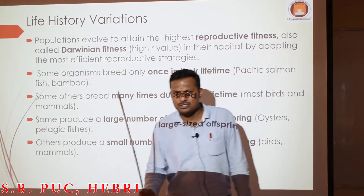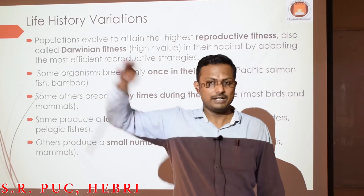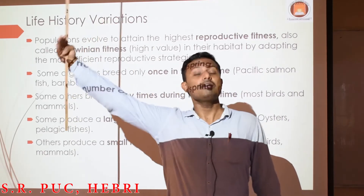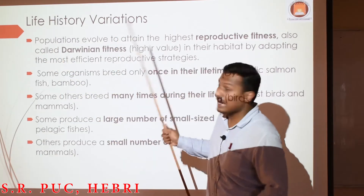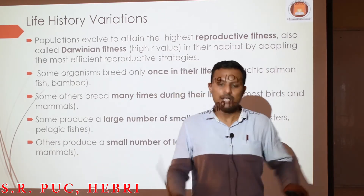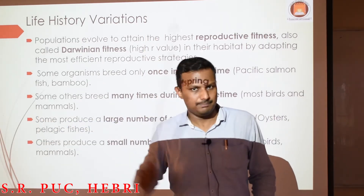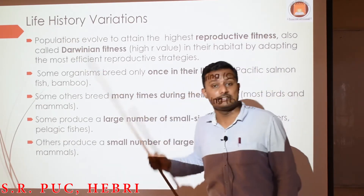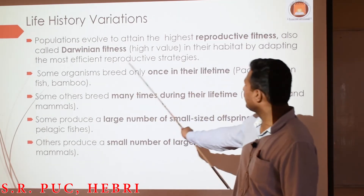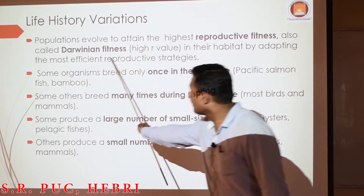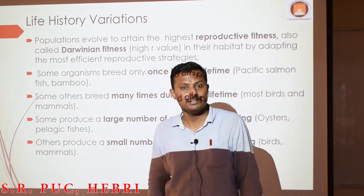All populations of any species always tend to evolve to the maximum extent — to the peak of their evolution — reaching the most reliable and most efficient mode of reproduction. The organism should be able to adapt to the most efficient mode of reproduction; it can be asexual or sexual. That kind of fitness is also called Darwinian fitness. When we say Darwinian fitness or reproductive fitness, the value of r for that population is always the highest.